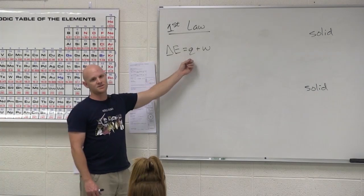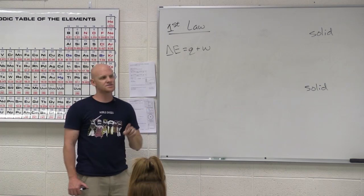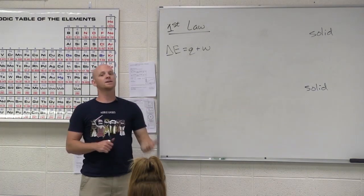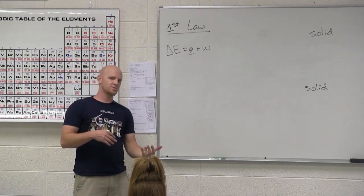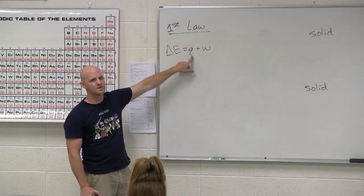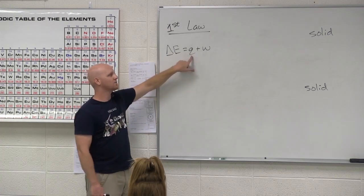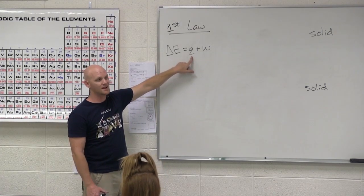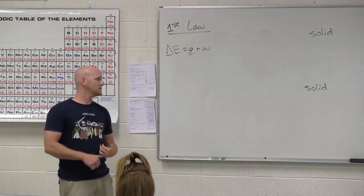Q here is change in heat. So heat can enter the system and if it enters the system where must it have come from? The surroundings. Or it can leave the system. In this case if heat enters the system the system is gaining the heat, that's when Q is positive. But if heat leaves the system and enters the surroundings, then Q is negative in that case. So it's all relative to the system. If the system is gaining energy, in this case heat, positive Q. If it's losing energy, negative Q.